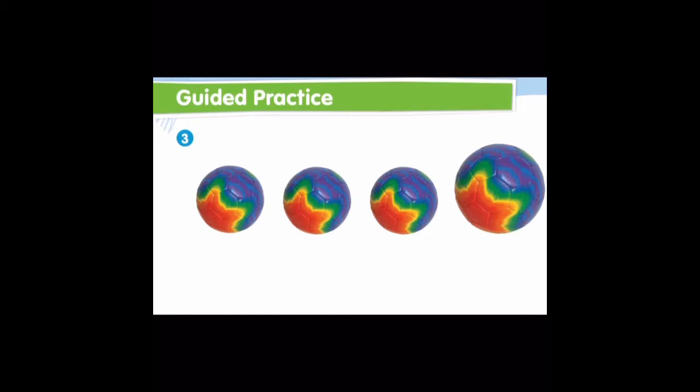Now take a look at this row. We have four balls, but which one of them is different than the others? Good job — this one is different. How is it different? It's different in size — it's much bigger than the other three, so we are going to put an X on it. And these three are all the same — they are all alike, so let's circle them.